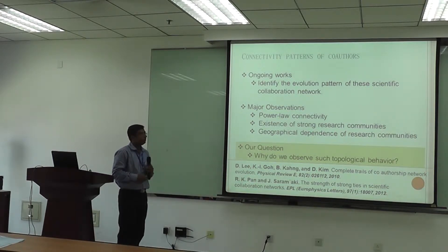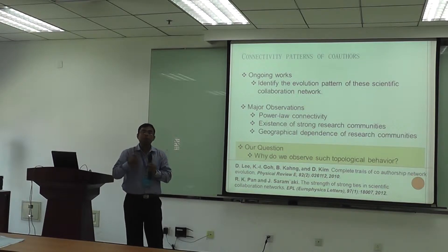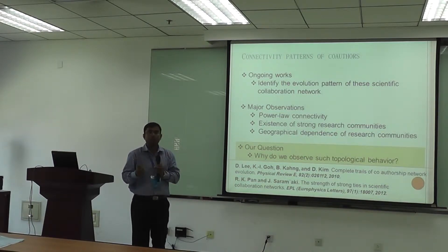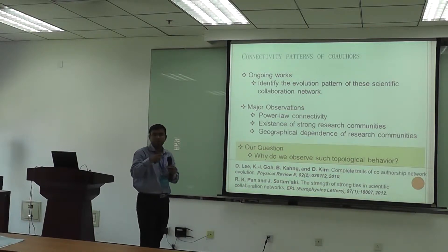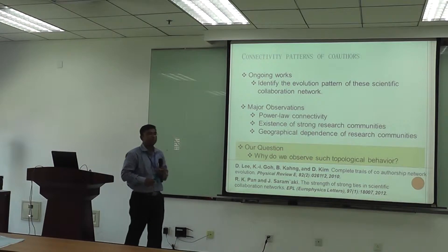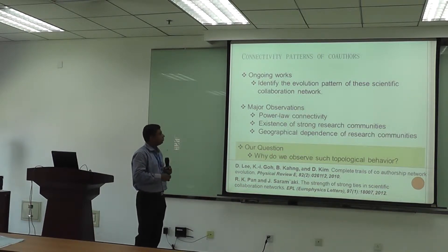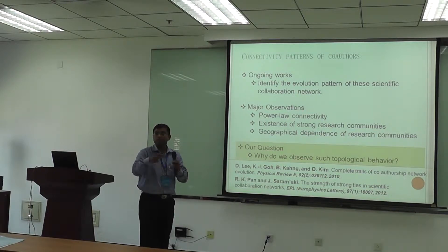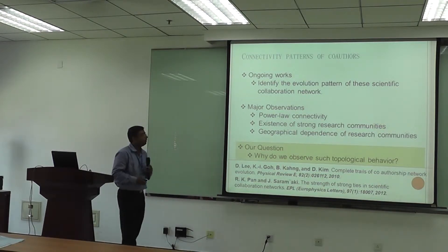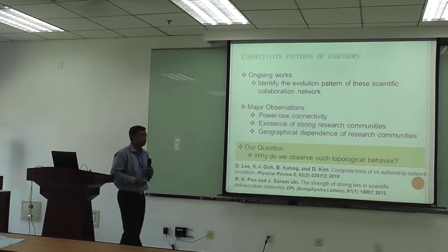Certain major observations include a typical power law connectivity, meaning there are certain hubs — researchers with very high numbers of publications — but their count falls in a scale-free order, almost linearly on a log scale. There is also the existence of strong research communities with closure among researchers, and a geographical dependence: people in China form research groups, people in the US form groups, with strong geographical dependence among researchers.